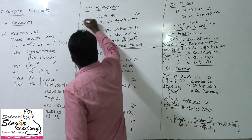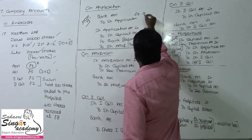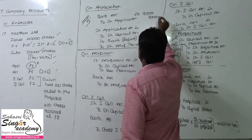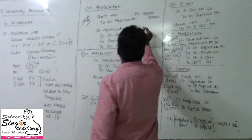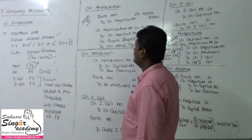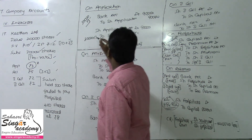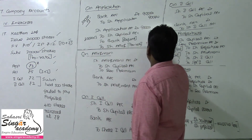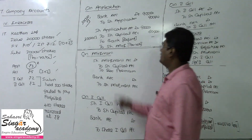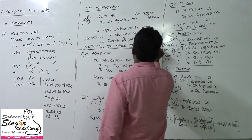For the application money: 30,000 applicants applied, each paying ₹3, so Bank Account is debited and Share Application is credited with ₹90,000. On allotment, Share Application is transferred to Share Capital: 20,000 shares into ₹3 equals ₹60,000 goes to share capital. The excess amount from 10,000 extra applicants — 10,000 into ₹3 equals ₹30,000 — is used for the next due (allotment).